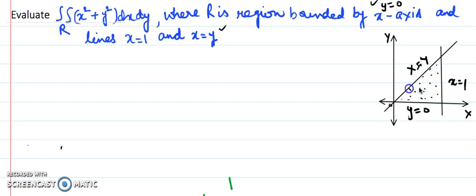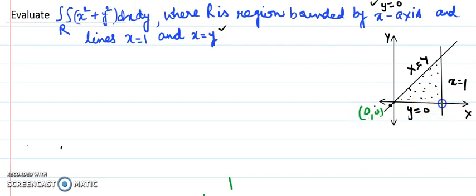The points of intersection are clearly visible from the diagram. The x-axis and the line x equals y meet at the origin, giving the corner (0, 0). Another corner is where x equals 1 and y equals 0, giving the point (1, 0).